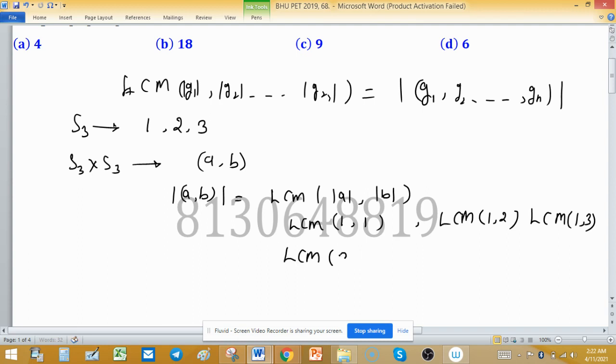LCM of 3, 1; LCM of 3, 2 and LCM of 3, 3 and LCM of 2, 3 and LCM of 1, 2 is done. If some LCM is remained, then you can justify yourself.